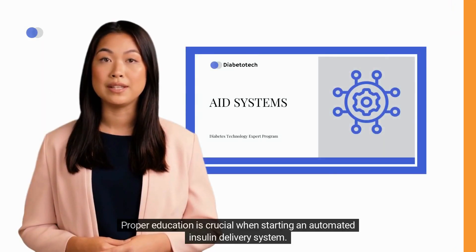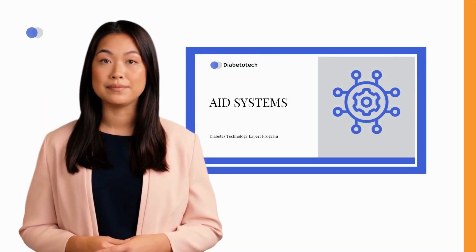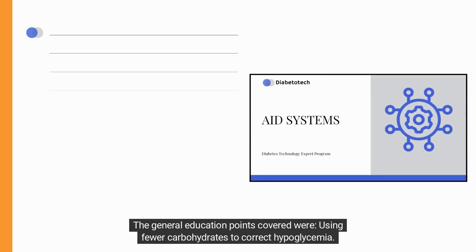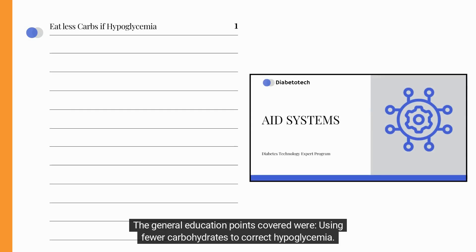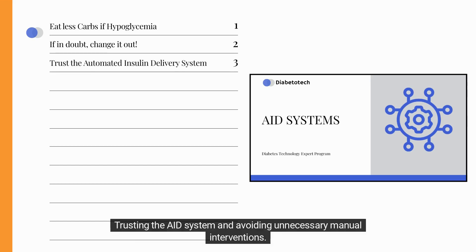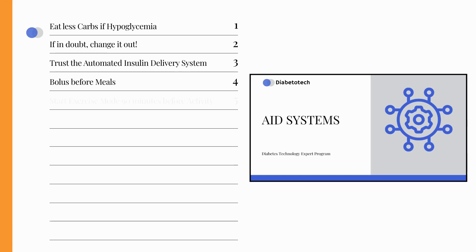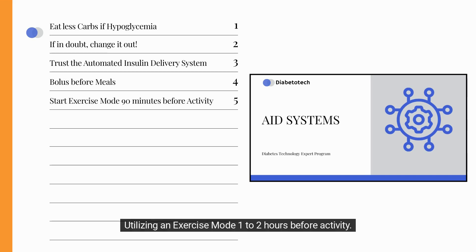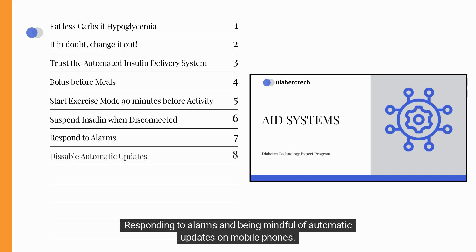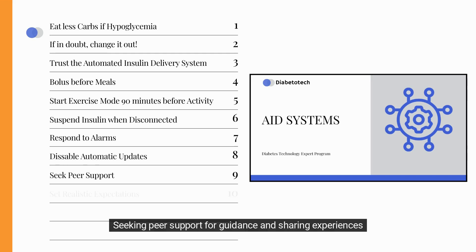Proper education is crucial when starting an automated insulin delivery system. General education points include: using fewer carbohydrates to correct hypoglycemia; considering infusion set problems if blood glucose remains high without apparent reason; trusting the AID system and avoiding unnecessary manual interventions; timing meal boluses before meals; utilizing an exercise mode one to two hours before activity; stopping insulin delivery if the pump is disconnected for more than 15 minutes; responding to alarms; and seeking peer support.